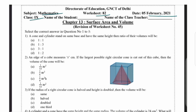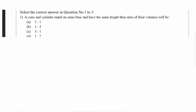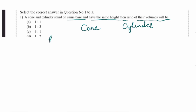So students, here we have some questions. Let's go one by one. Question number 1: a cone and a cylinder stand on the same base and have the same height. Then the ratio of their volumes will be. So here you have a cone and a cylinder, and they are standing on the same base.